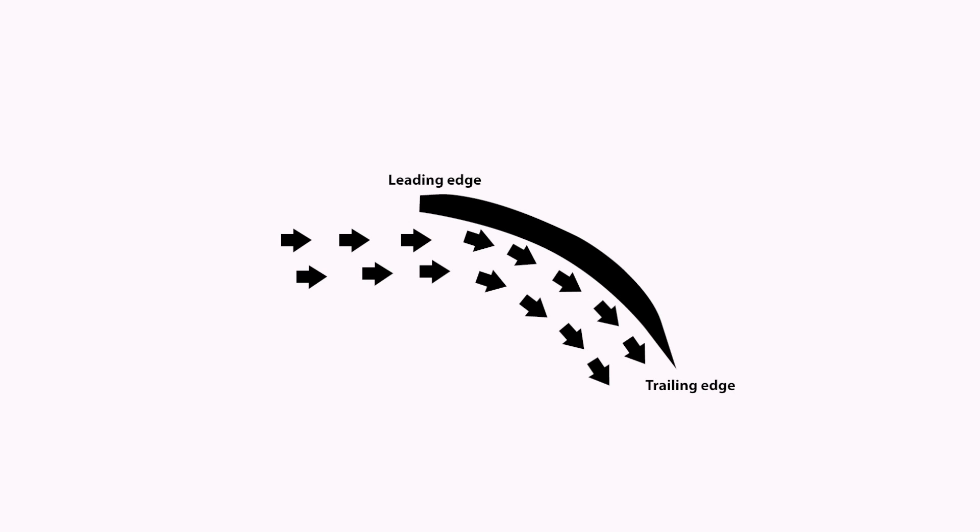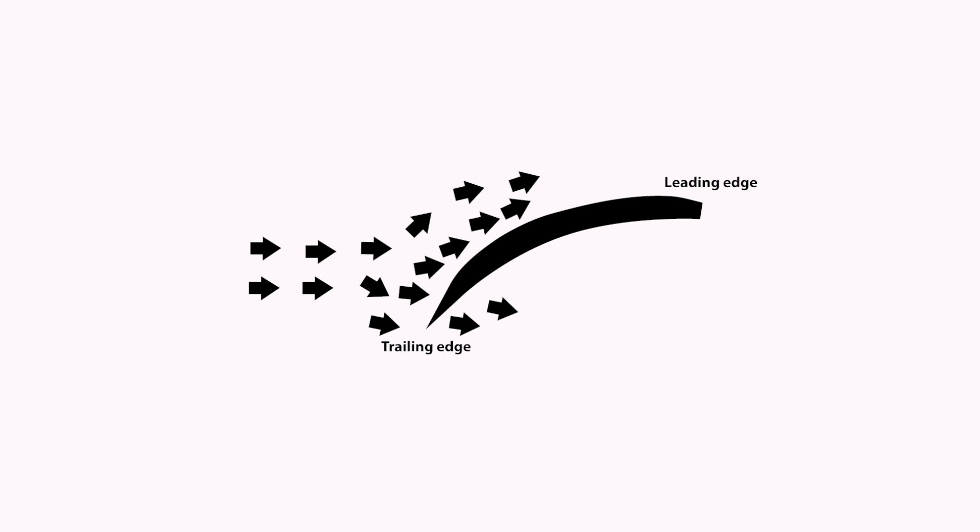This diagram shows a clockwise propeller. You have the leading edge in the front and the trailing edge in the back, and as the air passes through it generates lift. Now if you have a counterclockwise prop mounted on a motor that's going clockwise it'll pretty much do the opposite.